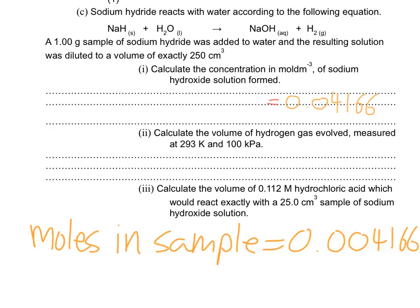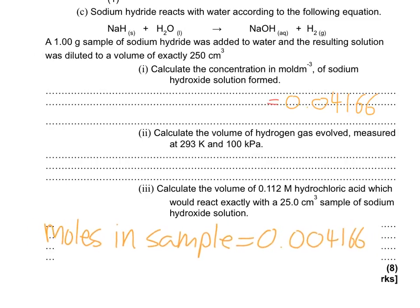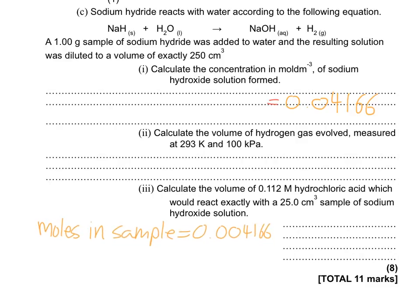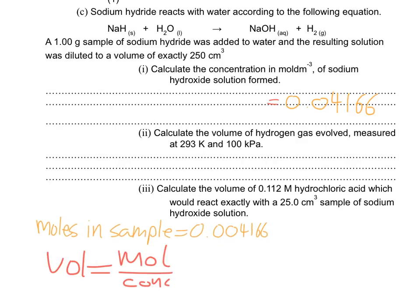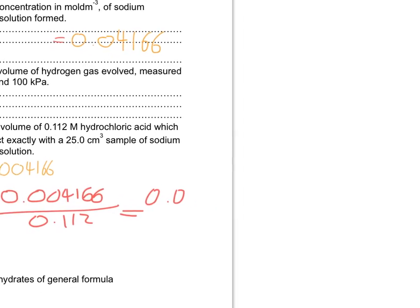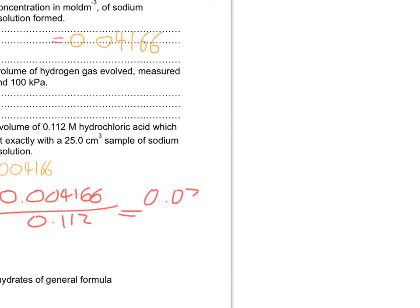Volume equals moles over concentration. So just throw in the numbers. 0.004166 divided by 0.112, and that comes out as 0.0372. And that is volume in dm cubed.